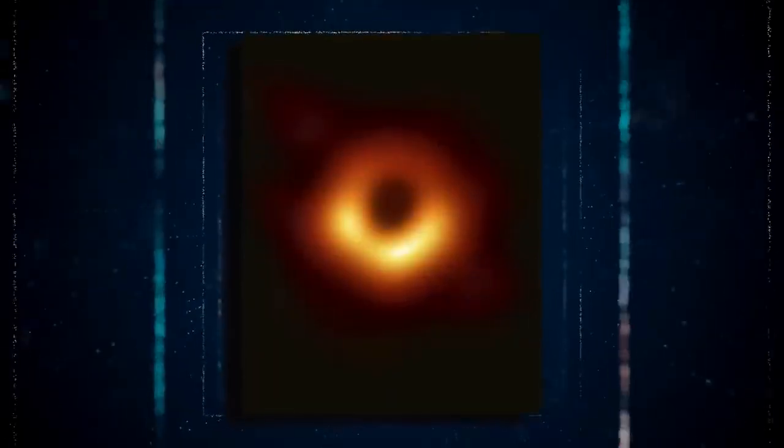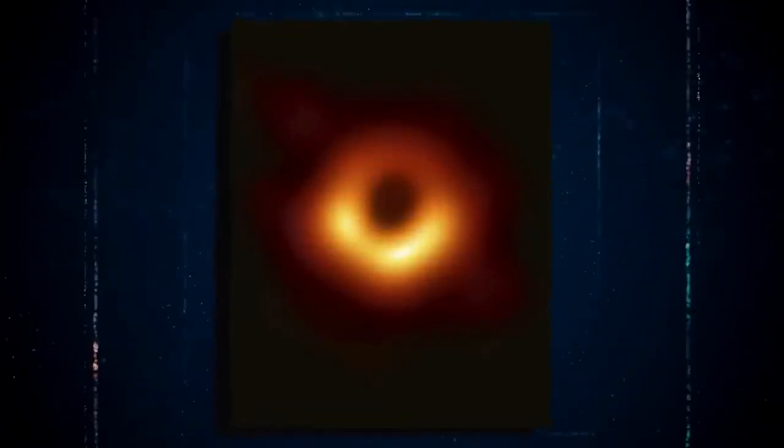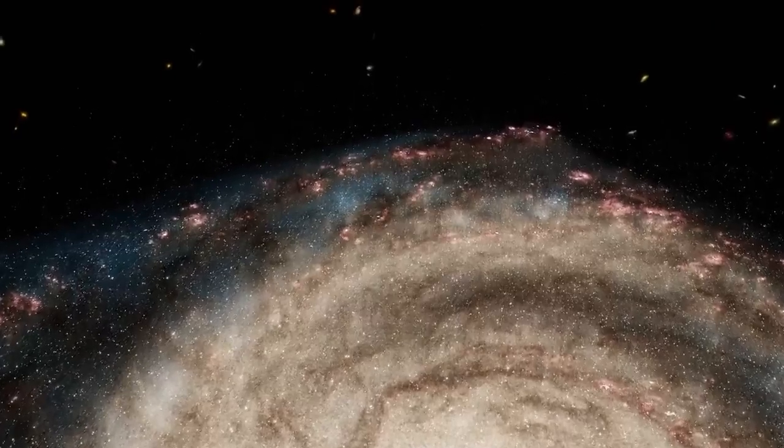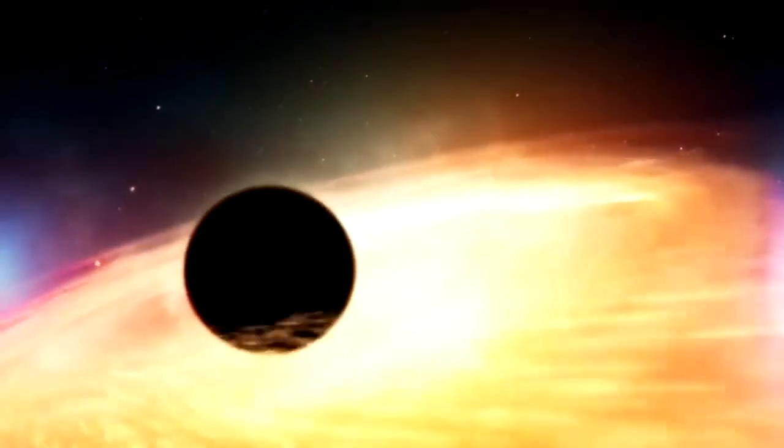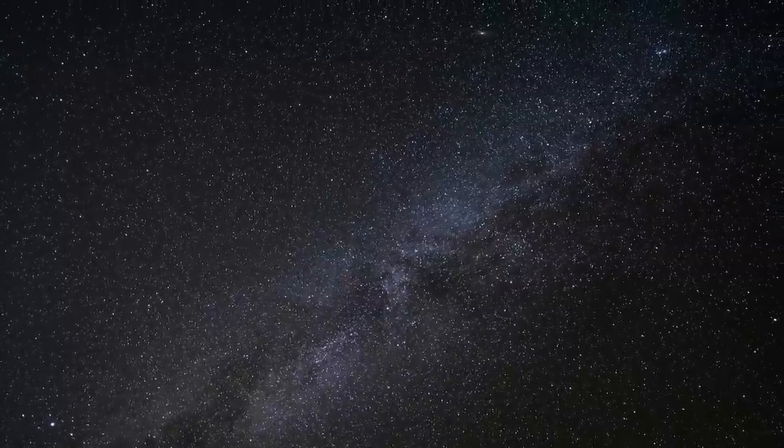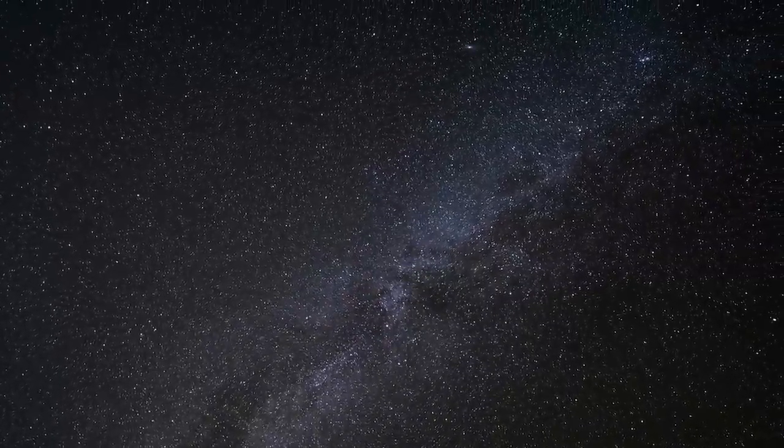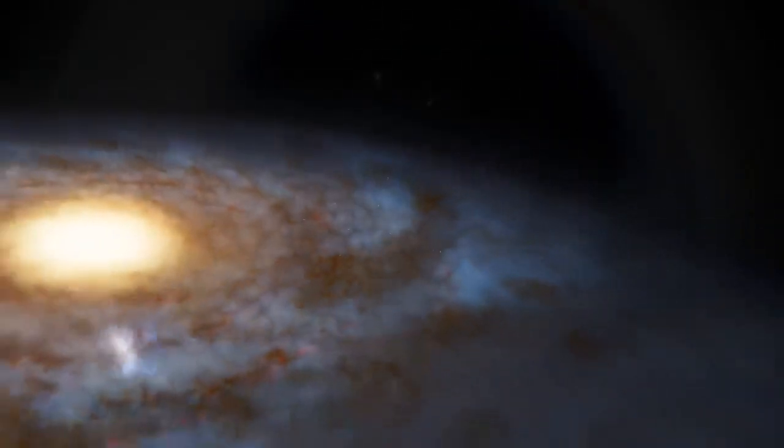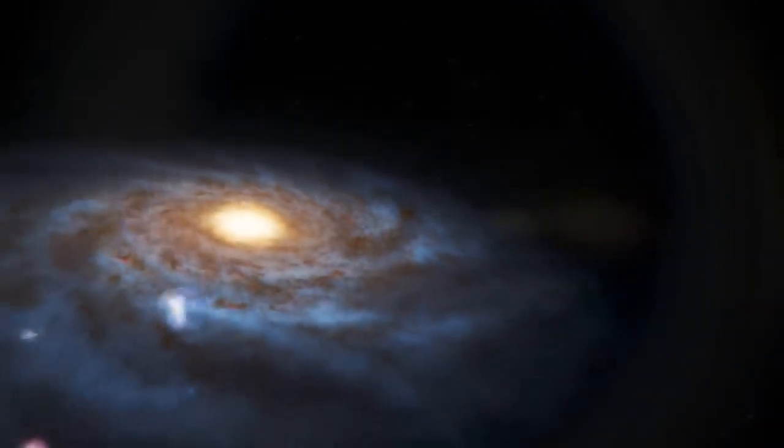While the photos of Sagittarius A answered prior concerns about the state of our galaxy's center, they also raised an even bigger issue, as scientists uncovered something really unexpected while examining that region of space. The Milky Way galaxy turned out to be stranger than astronomers had imagined, and the finding of an invisible barrier around the center of the Milky Way galaxy has sparked even more doubts about our galaxy's existing state.